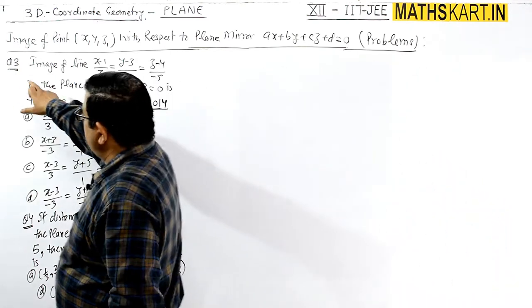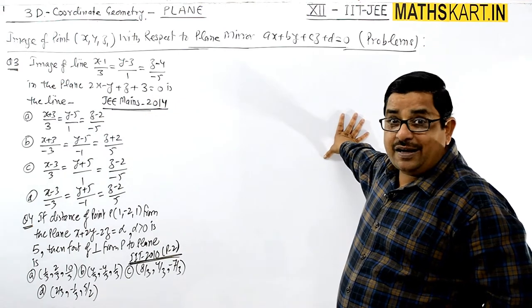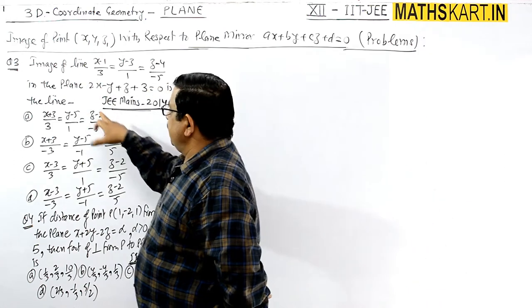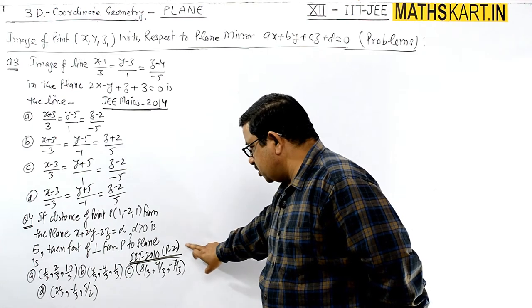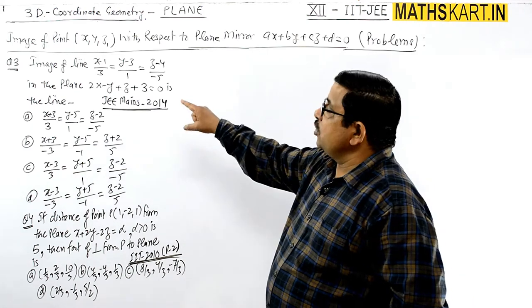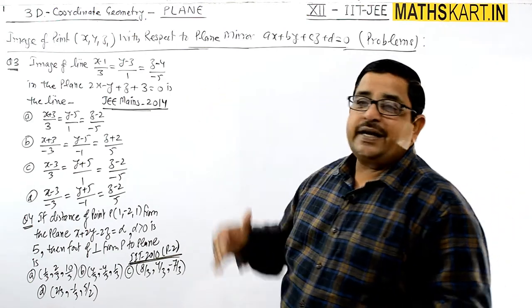Question number three - we have to find the line's image. This is an IIT JEE 2014 question. It's a very good question from the IIT 2010 paper second as well. First we have to check how to find the image of a line against the plane.